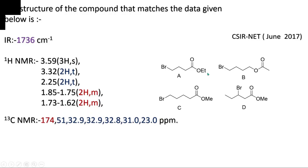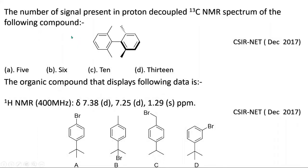Now come to the next question: the number of signals present in proton-decoupled 13C NMR spectrum of the following compound. This compound is known as biphenyl, and this question is asked in CSR Net December 2017. In this compound, the left side group and the right side group are similar, so there is a plane of symmetry, and perpendicular to this plane there will be another plane of symmetry.